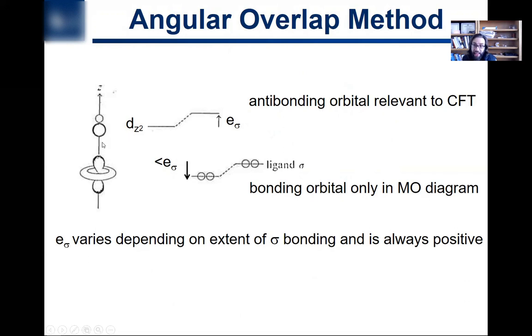So if you have a lot of overlap, if you have the angle, this is where the angular overlap comes in, if you have the angle such that you have a lot of overlap, that's going to be strong overlap, so E-sigma is going to be relatively high. If you have the angle off, so that you can't have a lot of overlap, E-sigma is going to be relatively low.